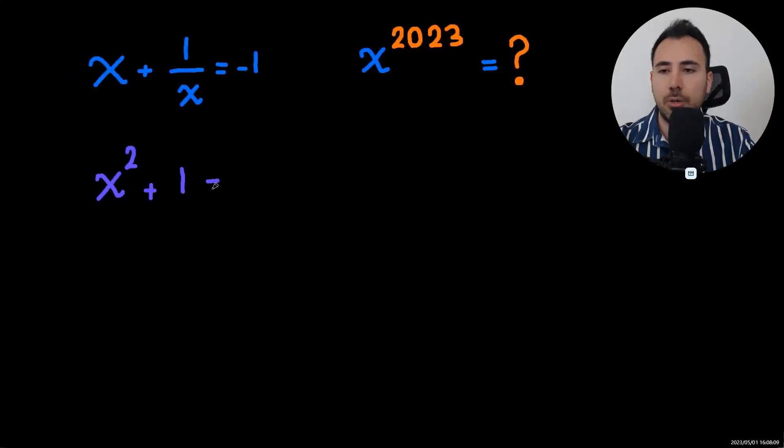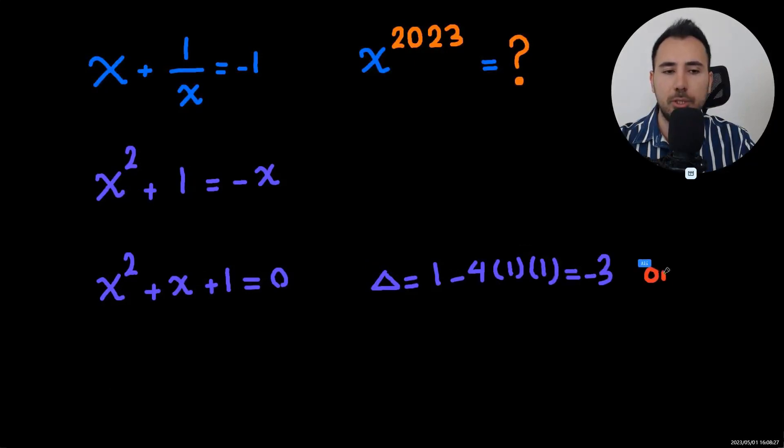So we have a quadratic equation. By using the discriminant value, b squared minus 4ac, we know that the discriminant is something negative. So we have no real solutions. So the question is more difficult than we thought it would be.